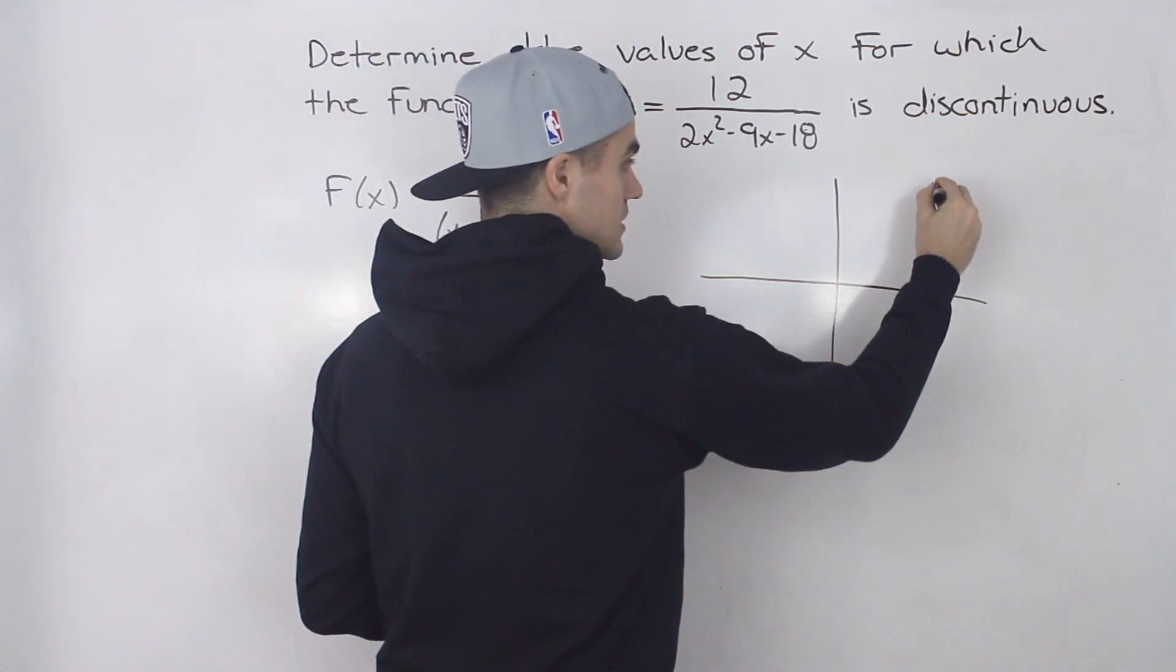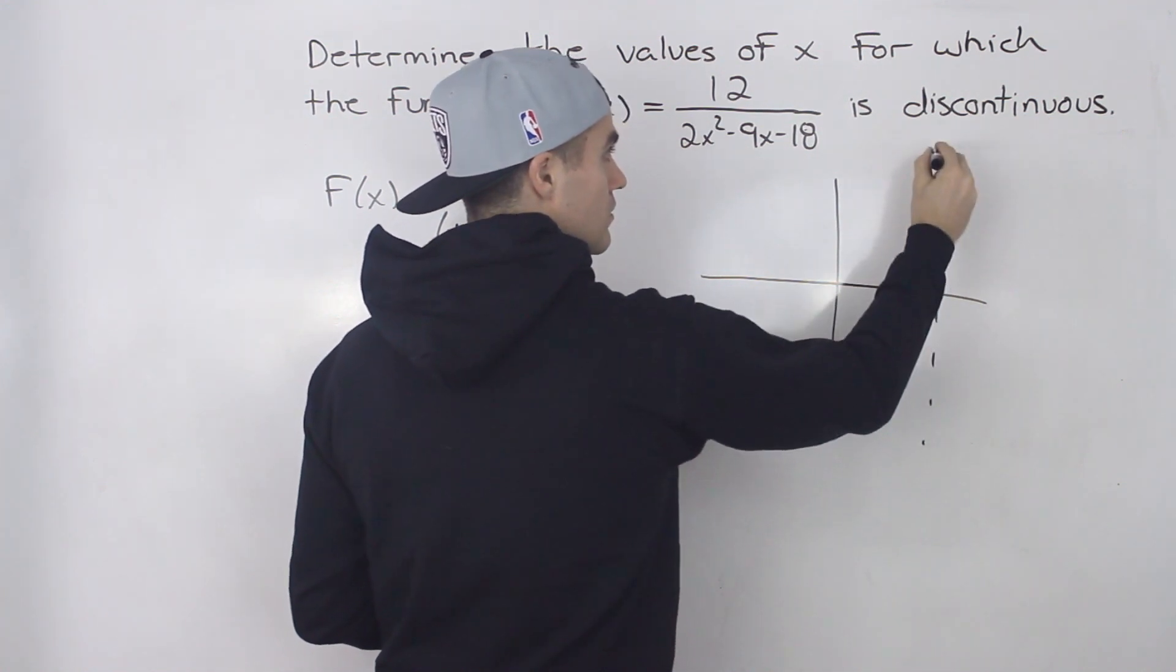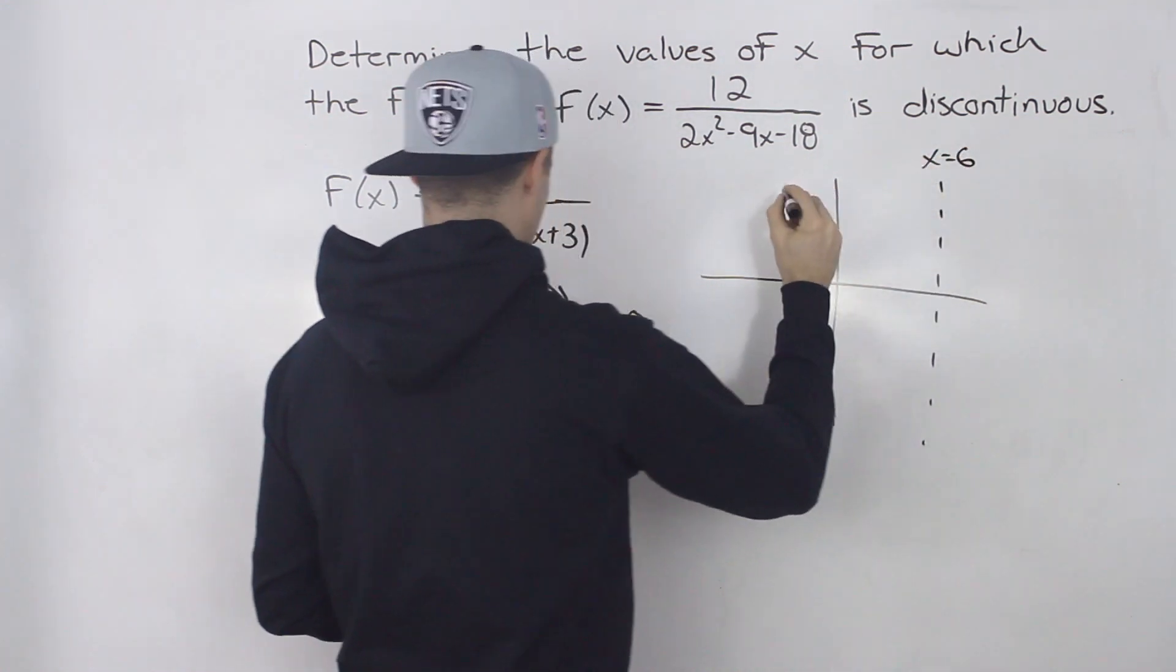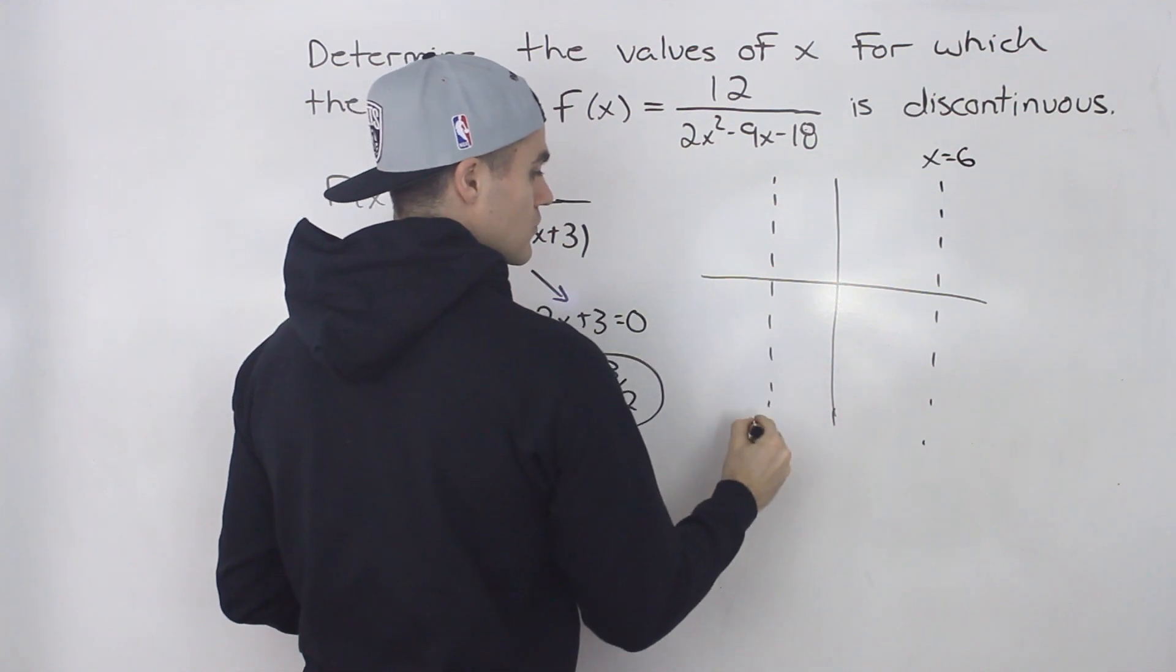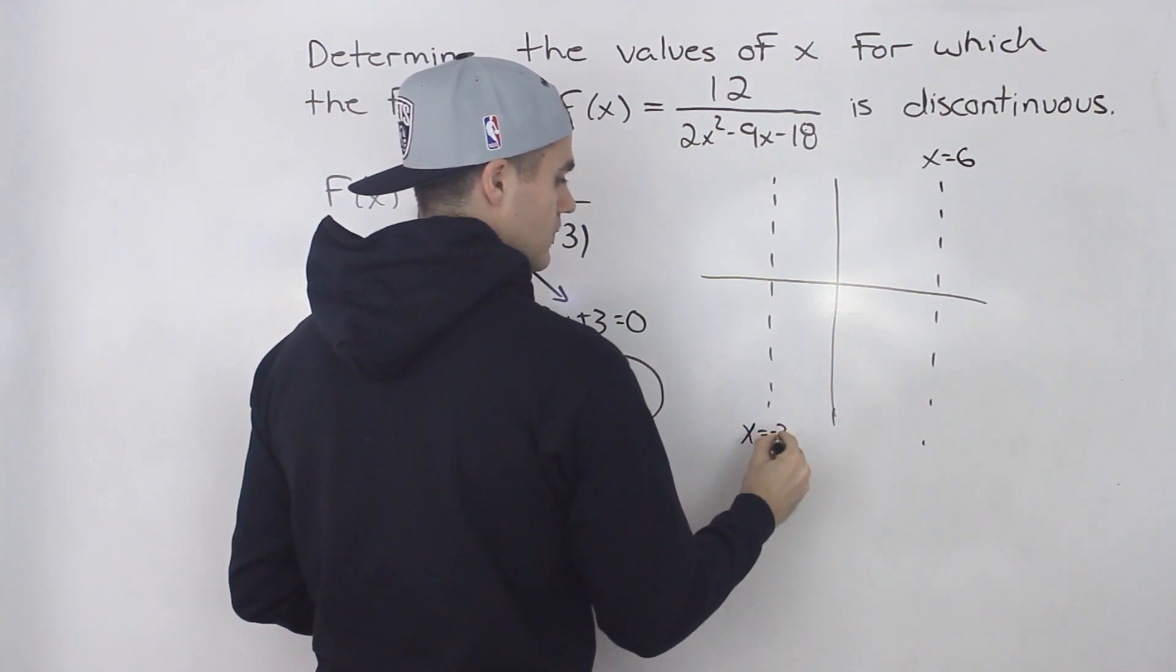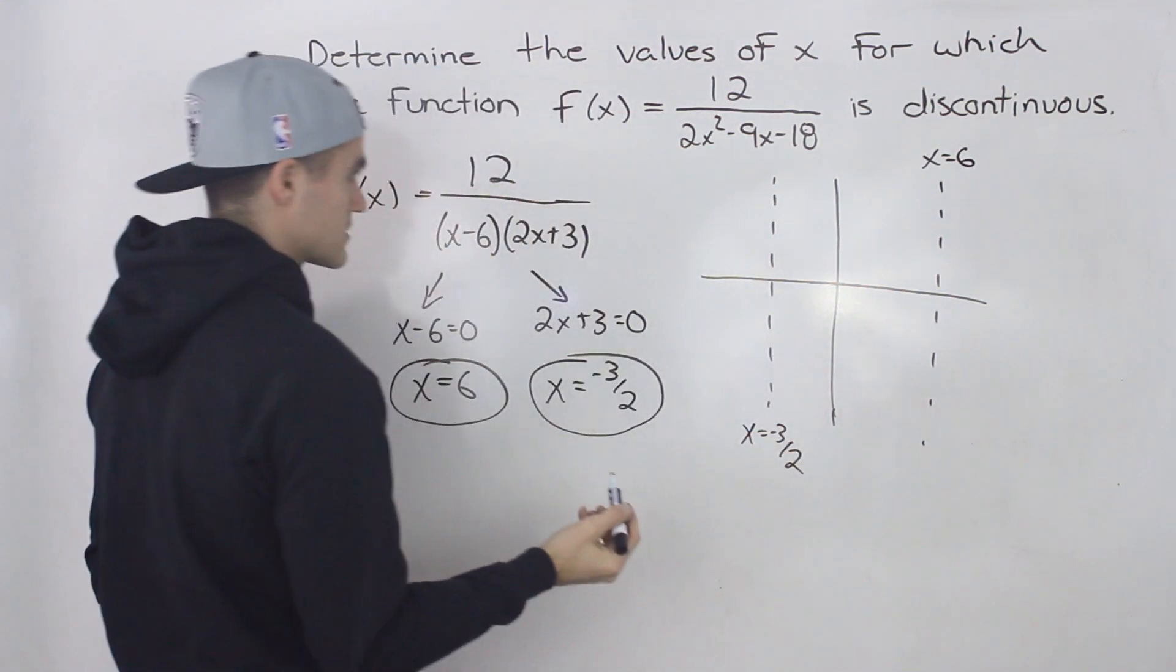So at an x value of 6, there is a vertical asymptote, and then at an x value of -3/2, there's also a vertical asymptote.